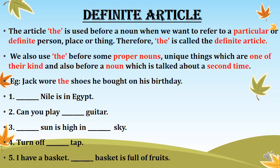Therefore 'the' is called the definite article. When we are talking about any particular person, place or thing — like Taj Mahal, which is a monument — we are talking about a particular monument, so we use 'the'. Similarly, for River Yamuna, we are talking about a particular river, so we use 'the Yamuna river'.